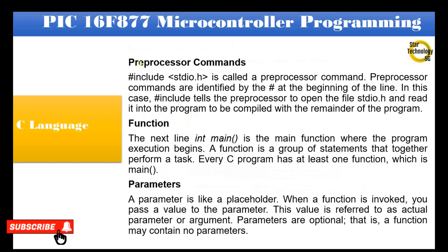#include <stdio.h> is called a pre-processor command. Pre-processor commands are identified by the hashtag at the beginning of the line. In this case, #include tells the pre-processor to open the file stdio.h and read it into the program to be compiled with the remainder of the program.